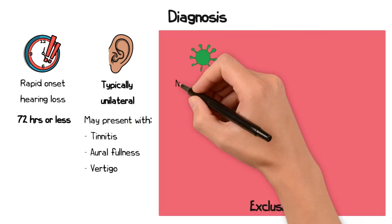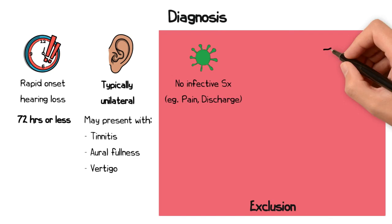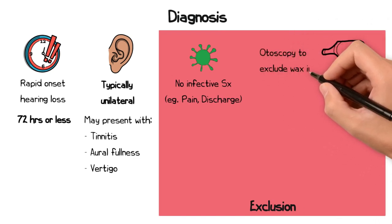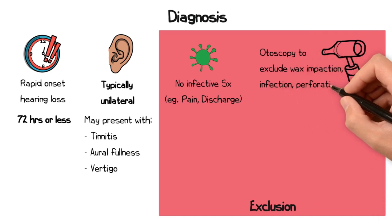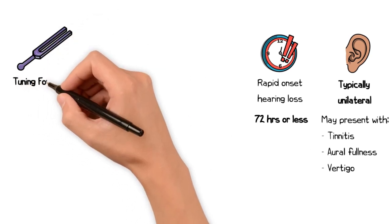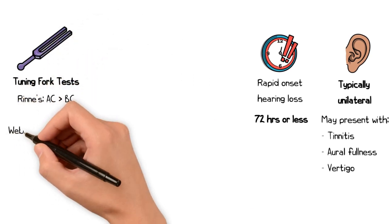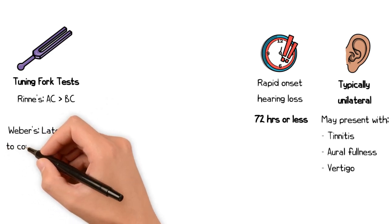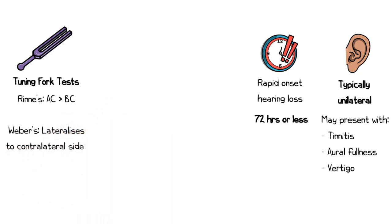Importantly, there are no symptoms of infection, such as pain or discharge. Otoscopy should be performed to exclude any wax impaction or obvious abnormalities of the tympanic membrane, such as infection, perforation, or middle ear effusion. In primary care, tuning fork tests should support a sensory neural loss, with air conduction being greater than bone conduction on Rinne's and Weber's lateralizing to the contralateral ear.